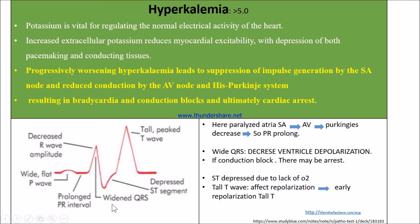There is a widened QRS complex because ventricular depolarization is affected. There will be tall, peaked T waves because the ventricle undergoes hyper-repolarization. The ST segment is depressed because of bradycardia; the ST segment represents ventricular repolarization, but conduction from SA node to AV node is impaired, affecting repolarization and causing decreased oxygen supply — hence the depressed ST segment.